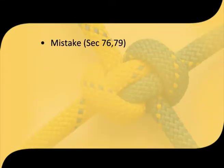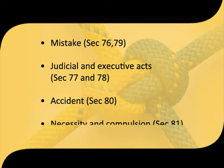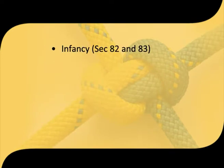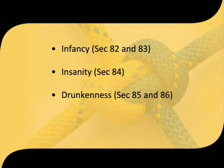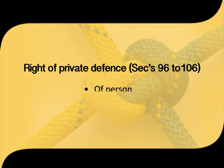The exceptions contained in the Indian Penal Code are: (1) mistake, (2) judicial and executive acts, (3) accident, (4) necessity and compulsion, (5) infancy, (6) insanity, (7) drunkenness, (8) consent, and (9) right of private defense — which covers both person and property.